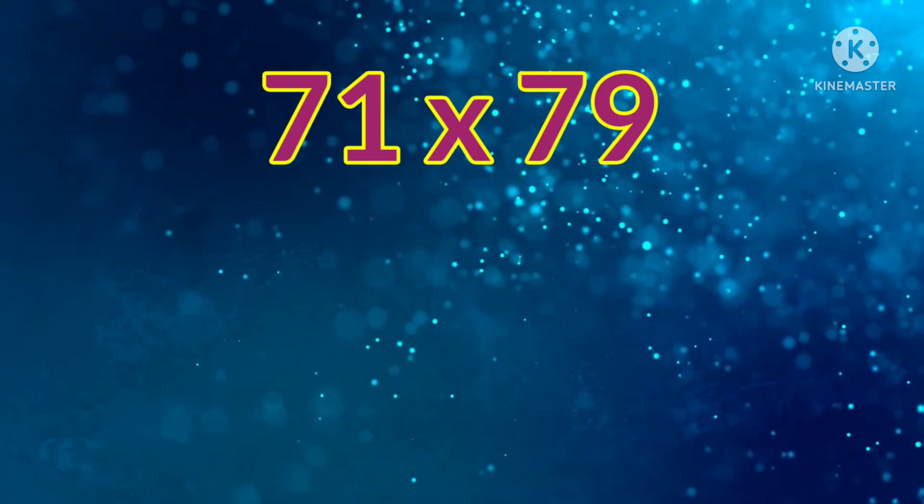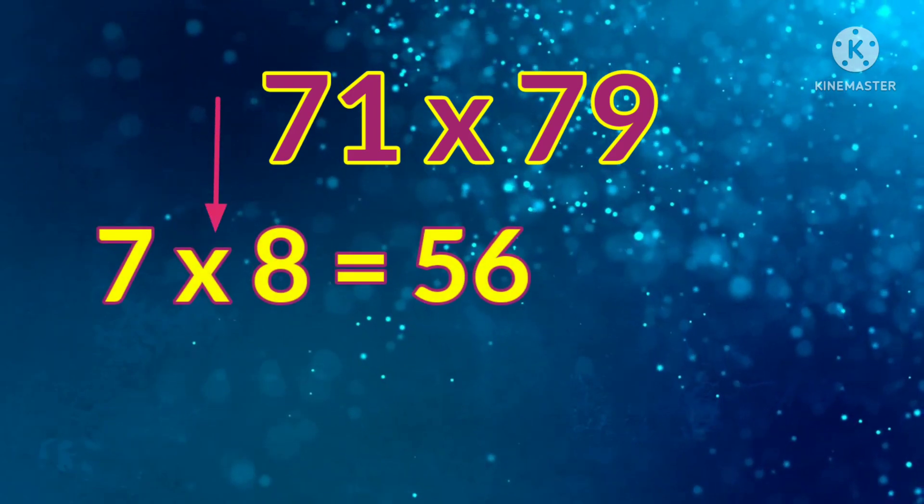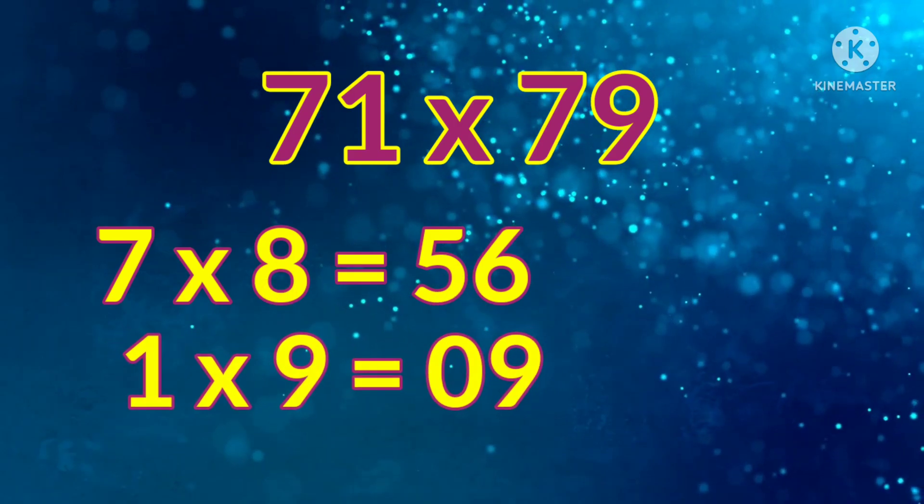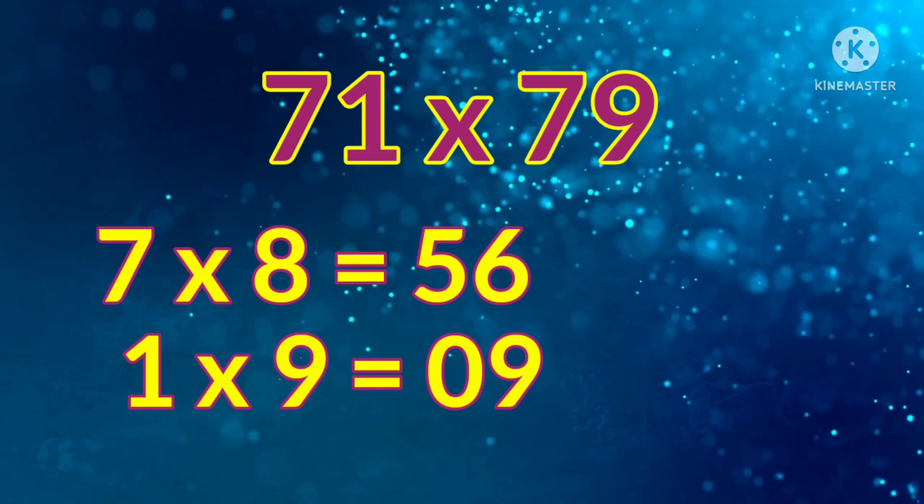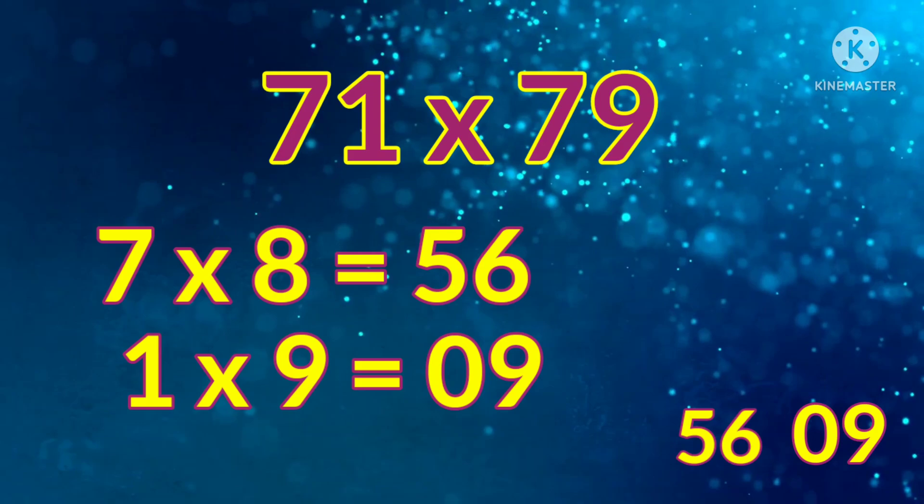Let's see one more number: 71 into 79. 7 times 8 is 56. 1 times 9 is 9. 9 is a single digit number, so we have to write 09. Therefore, answer is 5609.